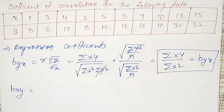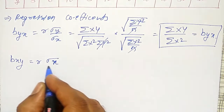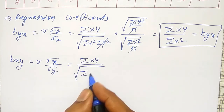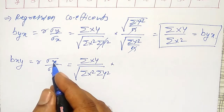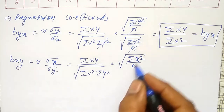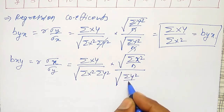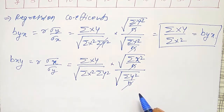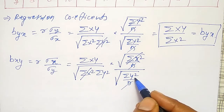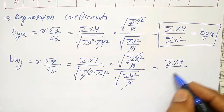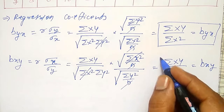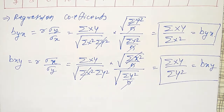Similarly, bxy I can also find out. It is r times sigma_x divided by sigma_y. Substituting the formula for r as summation XY divided by square root of summation X² times summation Y², and sigma_x as square root of summation X² divided by n, divided by square root of summation Y² divided by n — n cancels, square root of X² cancels, and it remains as summation XY divided by summation Y². This gives bxy. If I am able to find out these regression coefficients, then I can find out the straight lines easily.